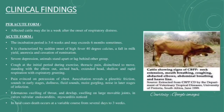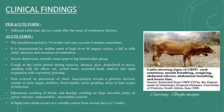Shallow and rapid respiration with expiratory grunting. Pain evidenced on percussion of the chest. Auscultation reveals pleuritic friction sounds in early stages, followed by dullness, fluid sounds, and gurgling sounds in later stages of infection. Edematous swelling of the throat and dewlap. Swelling on large movable joints. In calves, valvular endocarditis and myocarditis are noticed. In fatal cases, death may occur at a variable course from several days to three weeks.